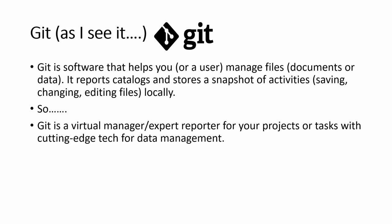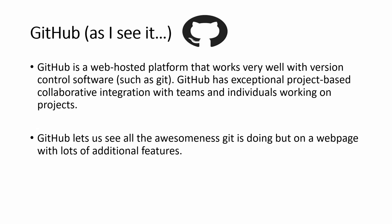On the other hand, GitHub is a web-hosted platform that works very well with version control software. The keyword here is 'version' — it means you have a document, file, software, or video that has moved to another version. There's a difference between the first and second version, and you have a version manager that can give you reports, tell you what has changed, your status, and the dates things changed.